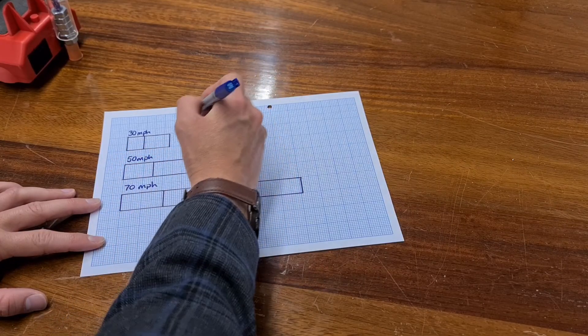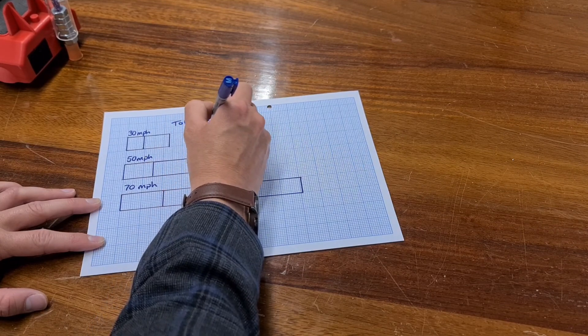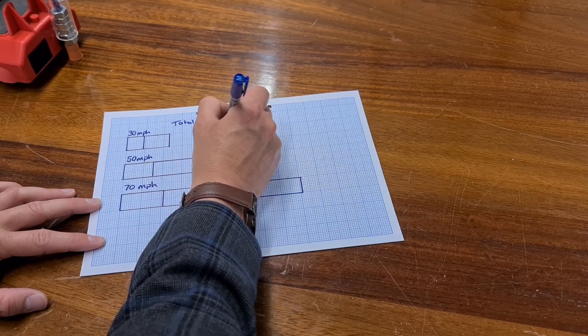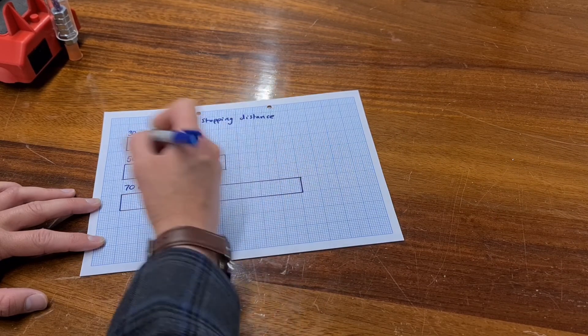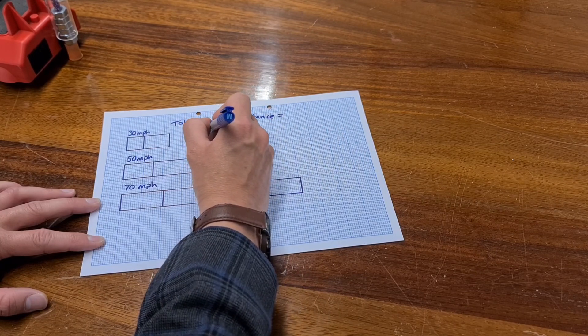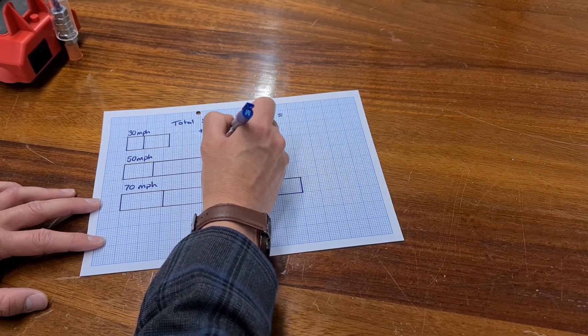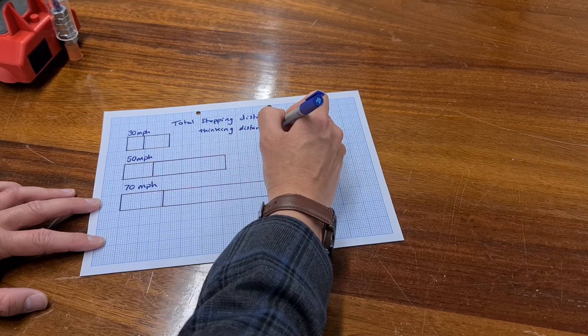If we were to think about the total stopping distance, what we would need to do is we would need to add together the thinking distance and the braking distance.